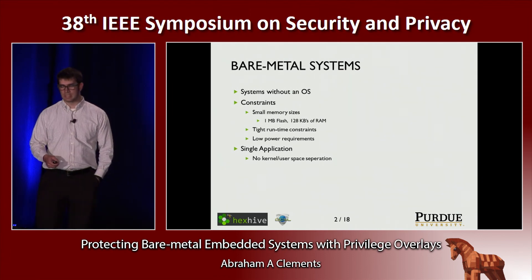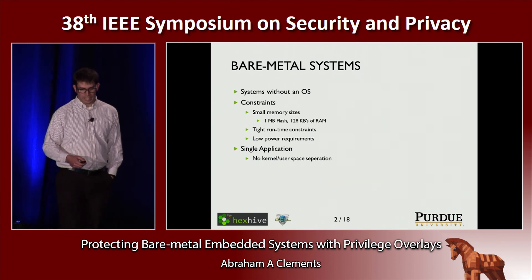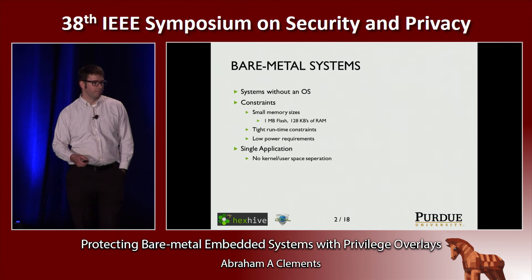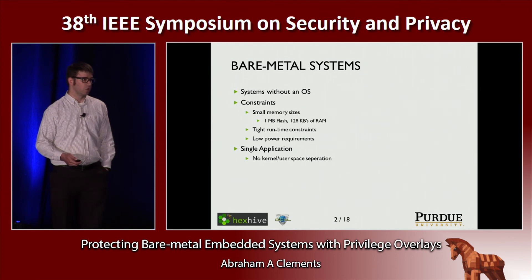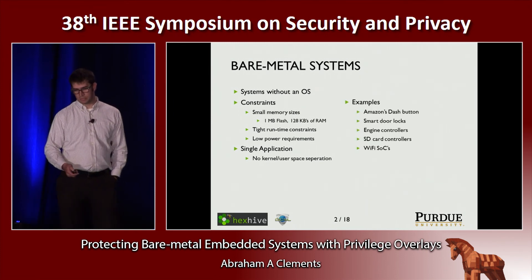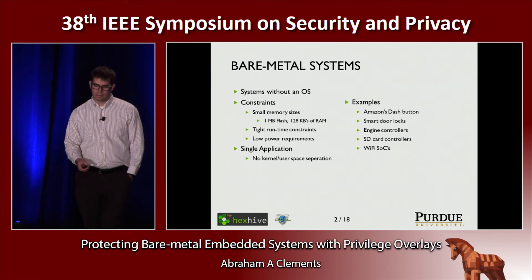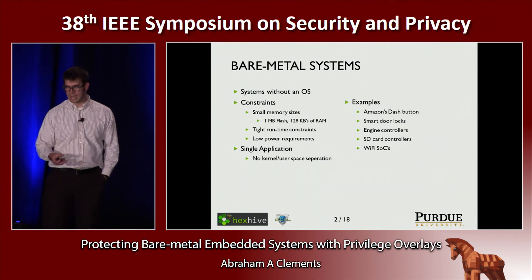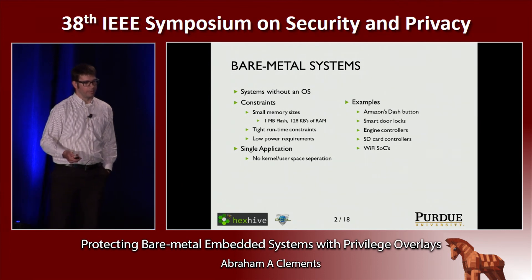These systems have very tight constraints on memory, runtime, and energy. A large system would have about a megabyte of memory for code and 120 kilobytes of RAM — that would be a larger-end bare metal system. Some examples of these systems are Amazon's Dash Button, smart door locks, engine controllers, and SD card controllers. Inside your SD card, there's a microcontroller that handles flash wear leveling — those run bare metal code.